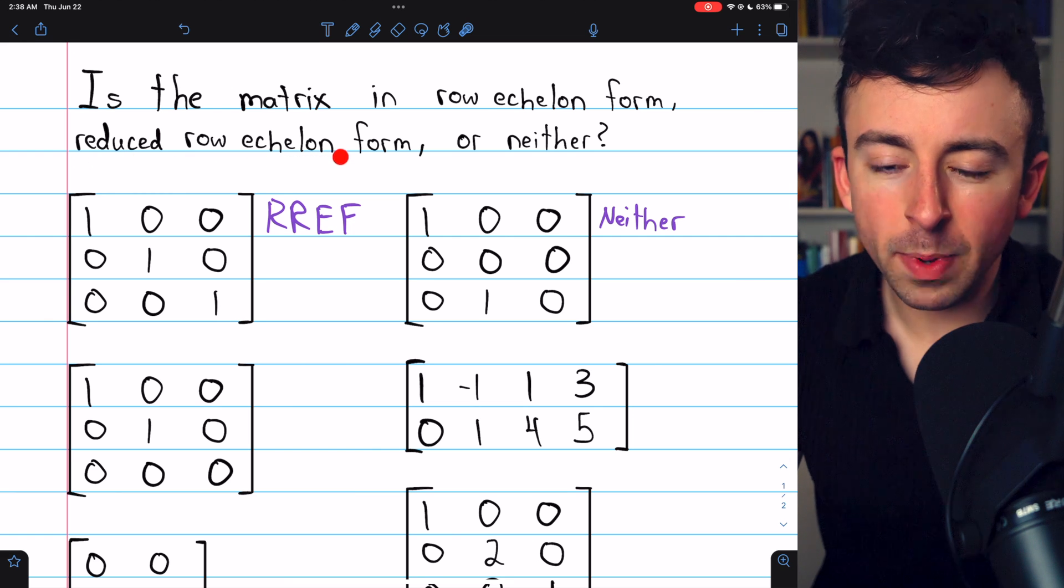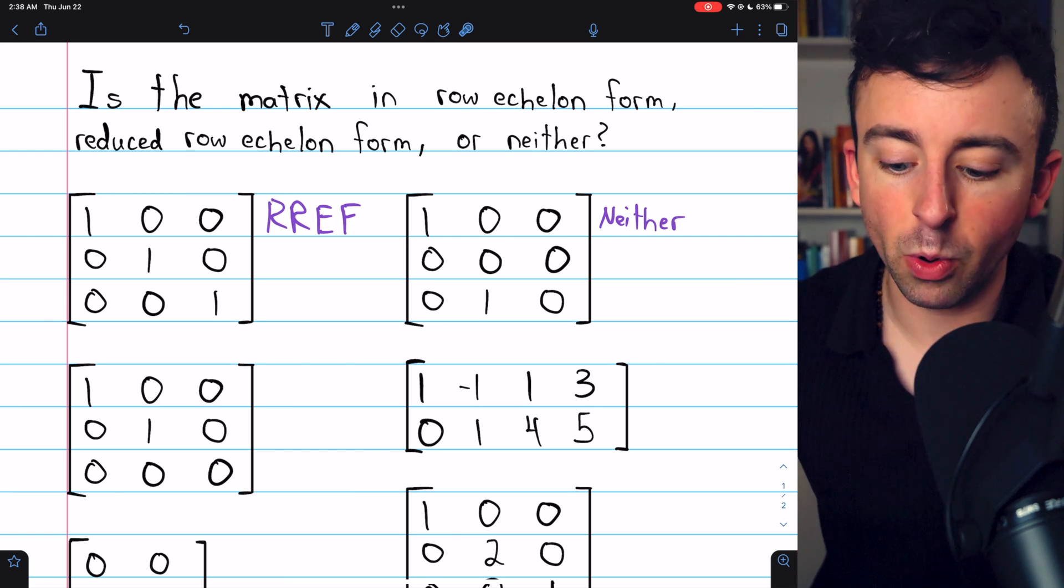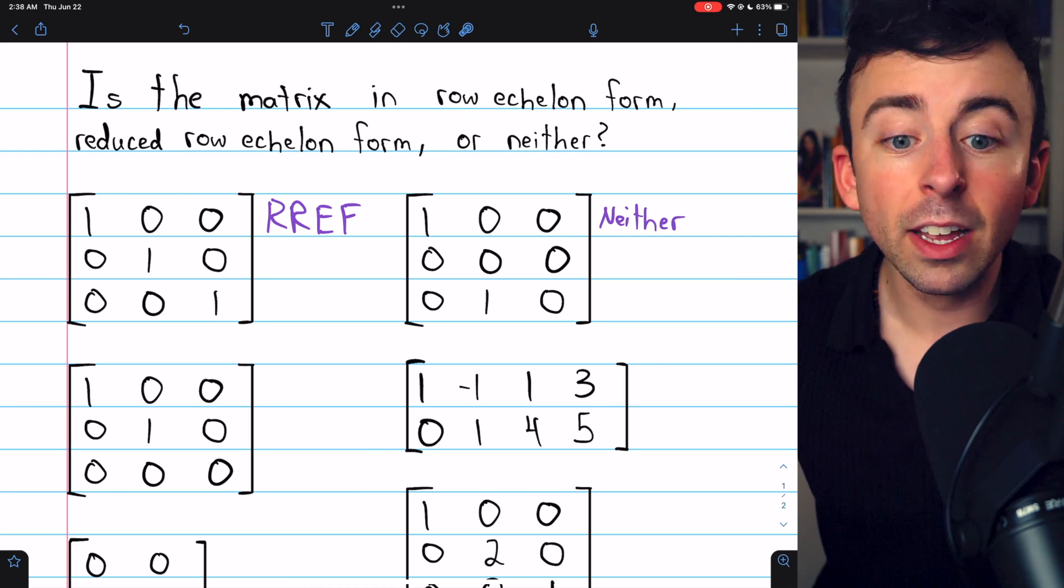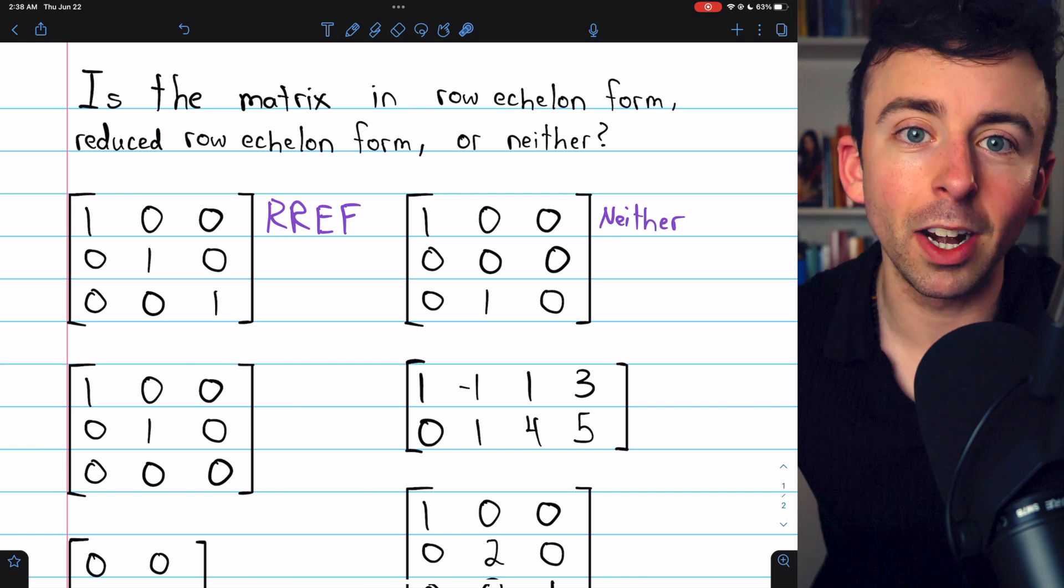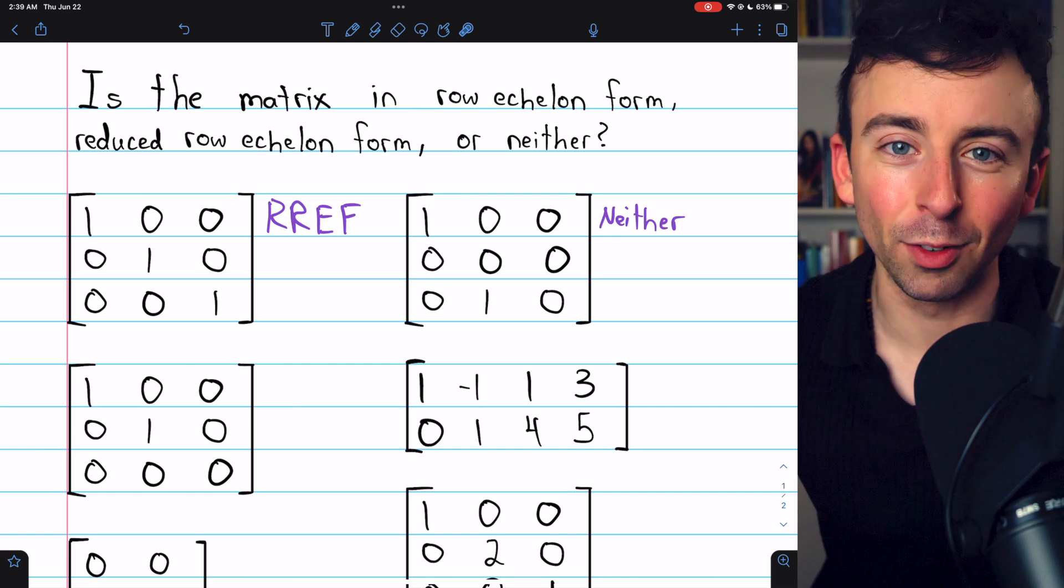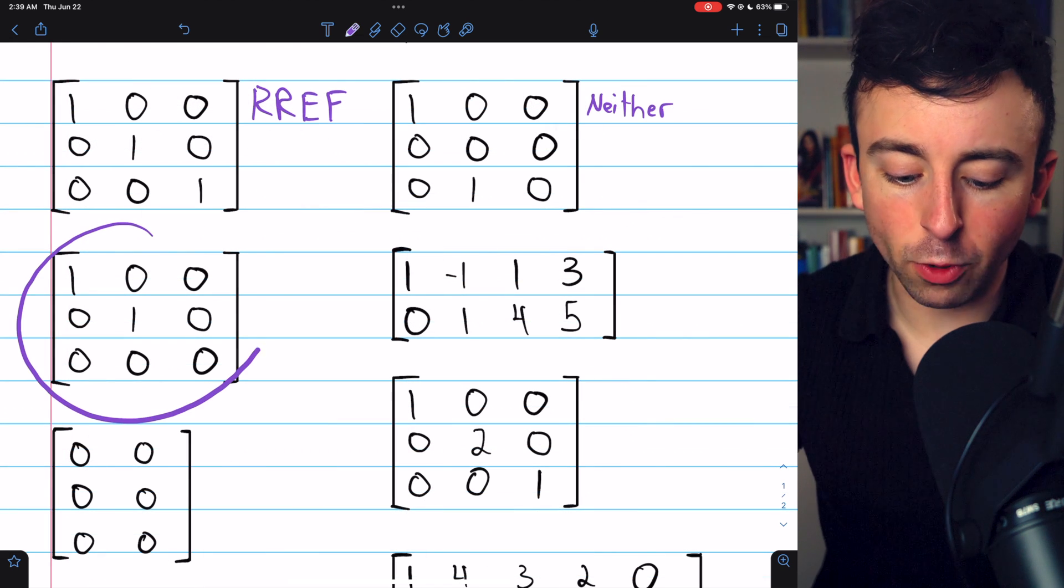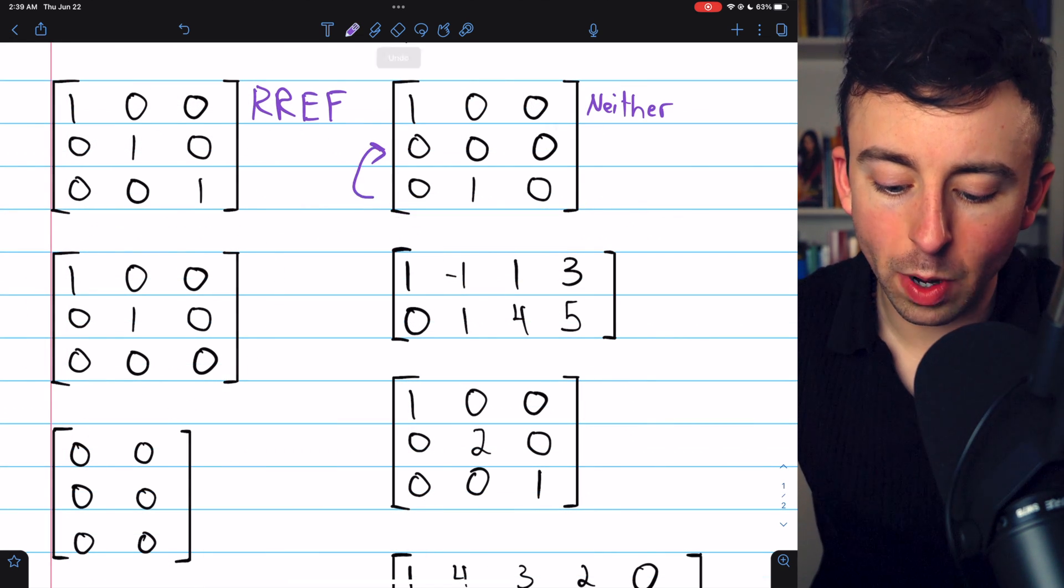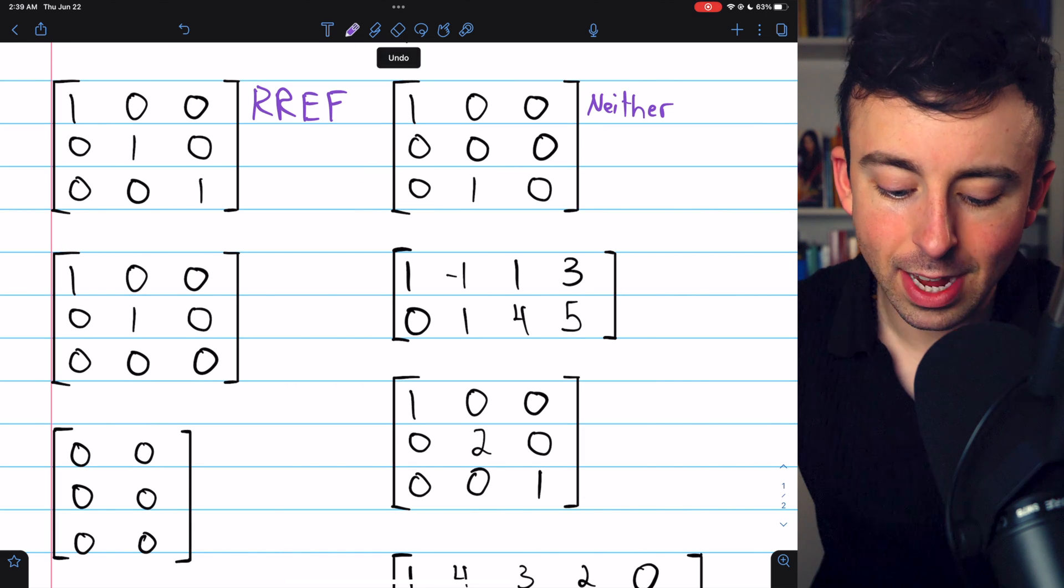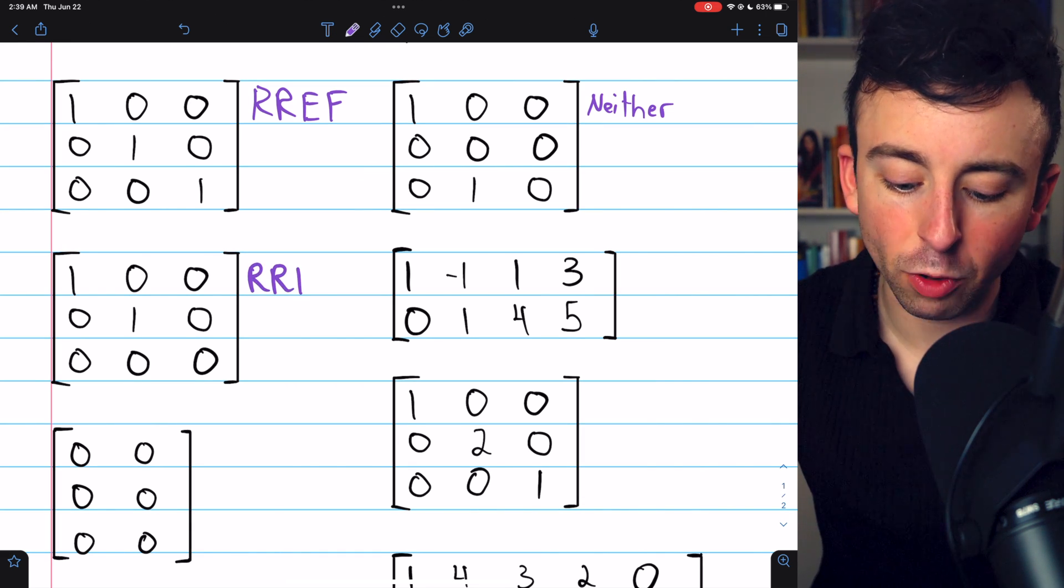Reduced row echelon form is just a stronger set of requirements than row echelon. So if it's in reduced row echelon form, it's also in row echelon, but I'm not going to mention that again. Just say that this one time. We have this matrix, which is actually just the previous matrix with rows two and three swapped. So we can see this is in reduced row echelon form.